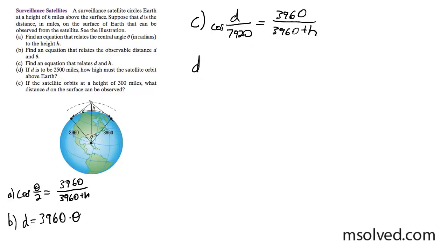Now we're going to start utilizing these equations. Part D wants us to know if d is to be 2,500 miles. The observable distance, I should state, it's this distance around here pretty much where you can observe. If that's to be 2,500 miles, how high does the satellite have to be, which is h. So what we're going to do here is we're going to use part C.